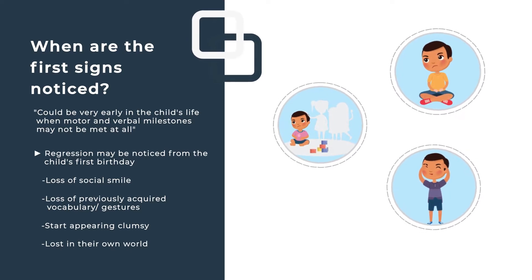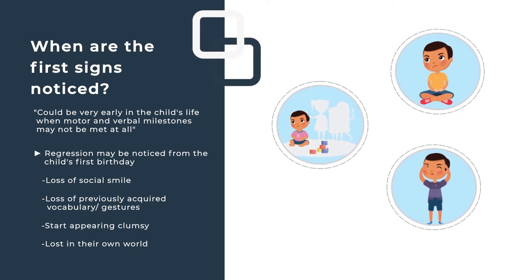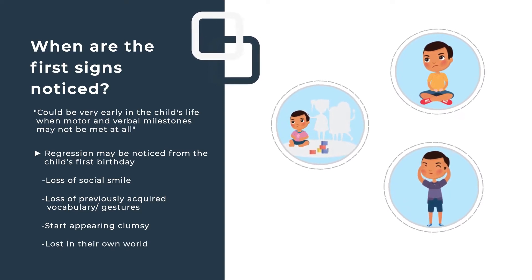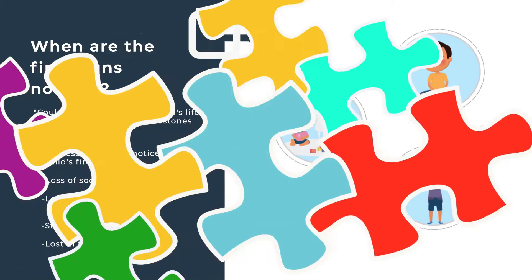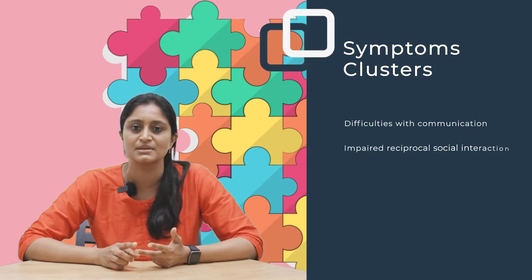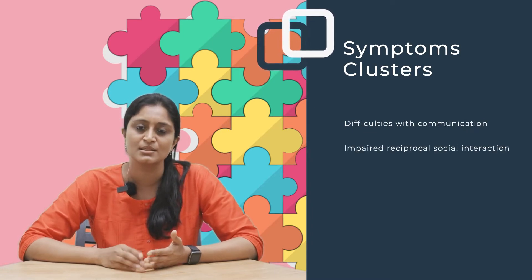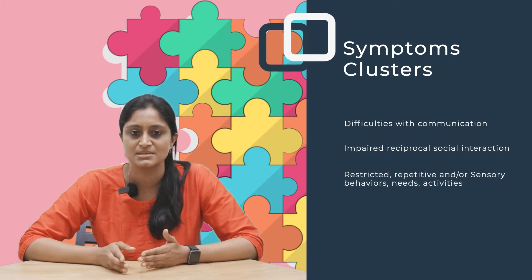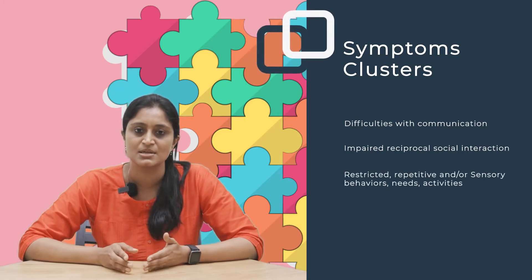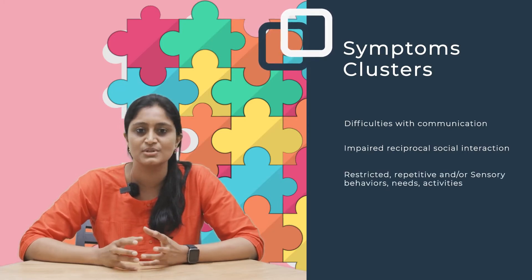If you suspect your child needs a diagnosis for autism, there are three symptom clusters to look for: first, difficulties with communication; second, difficulties with social interaction; and third, repetitive and restricted interests.